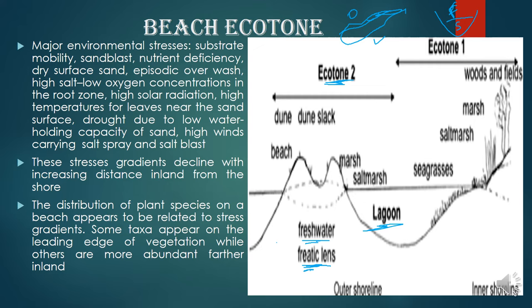This type of freshwater phreatic lens can be seen in very small islands, coral reefs, and atolls. This type of region will contain this ecotone. The other ecotone we are talking about is the lagoon system.